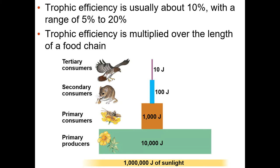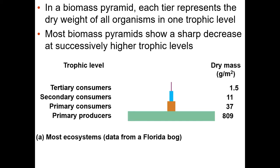For trophic efficiency, we're not looking at just mammals or just insects, but for each level it's somewhere between 5% and 20% typically across all organisms. The 10% rule is just a very general rule — you're generally changing an order of magnitude with each trophic level.